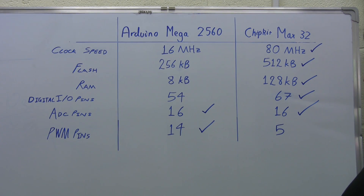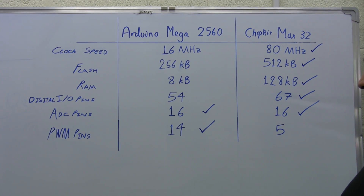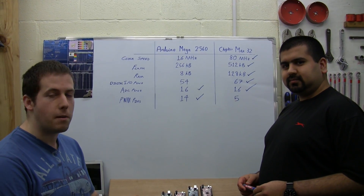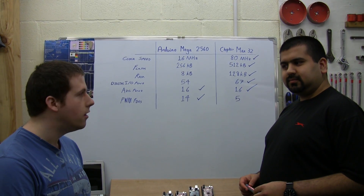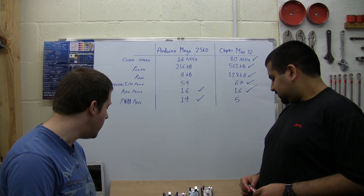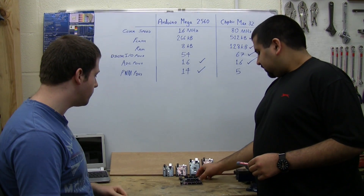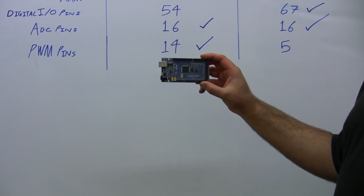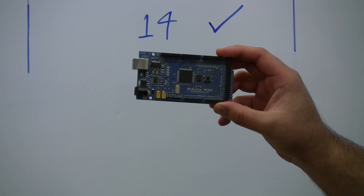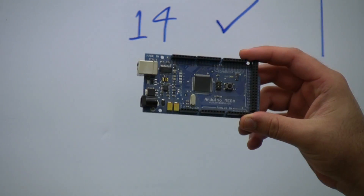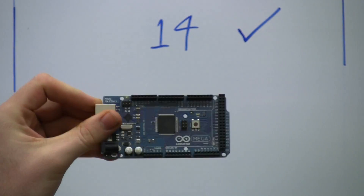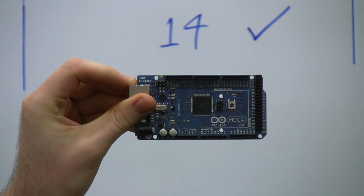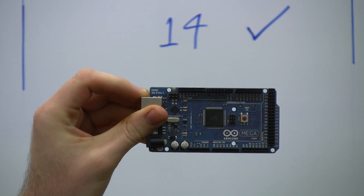The next step is to talk about the software. We're actually going to run through programming the boards. We've got the two boards here. First I'll show you the Arduino - this is an old style Arduino Mega that isn't in production anymore. We do have a new one here - this is the Mega 2560, the one we've actually compared on the whiteboard.